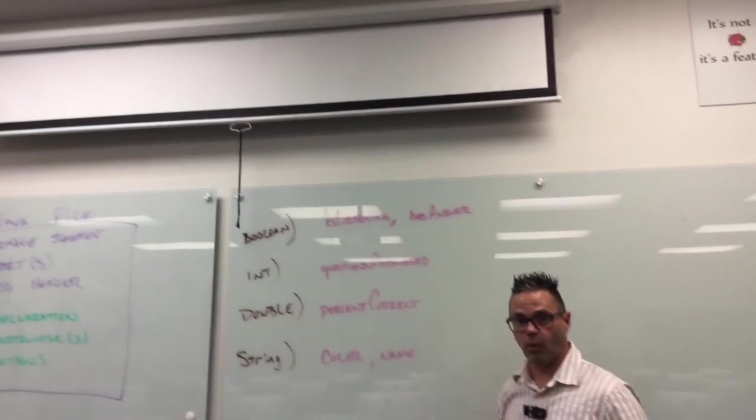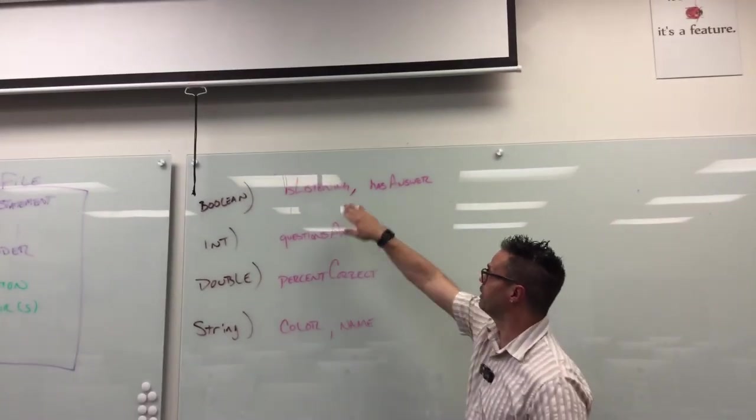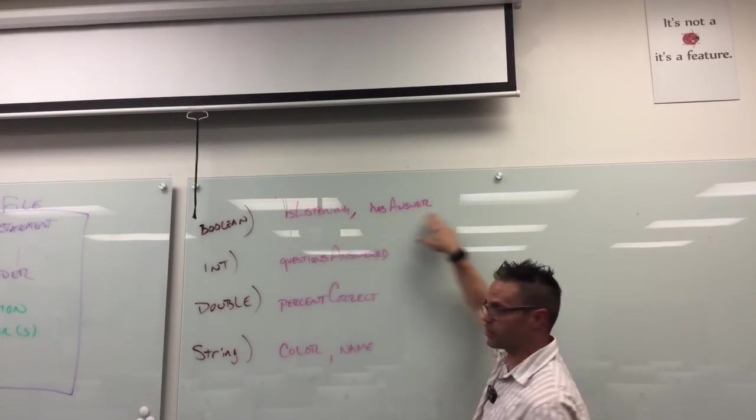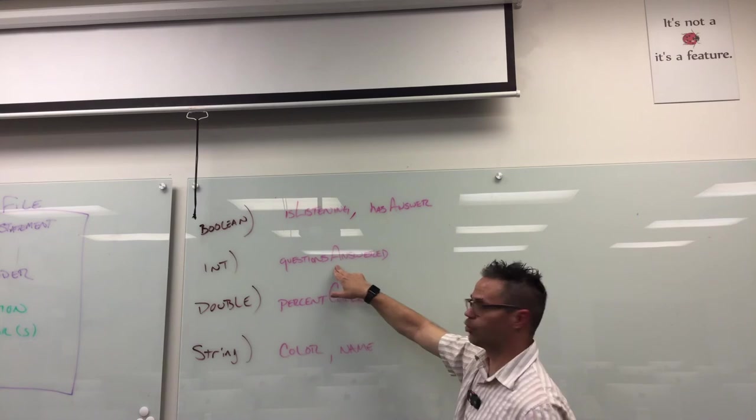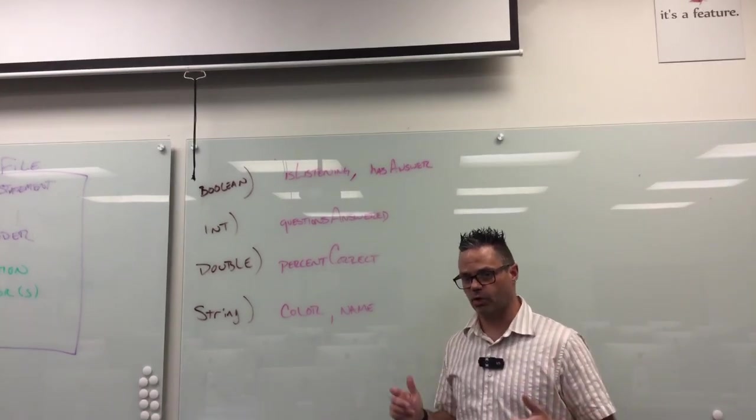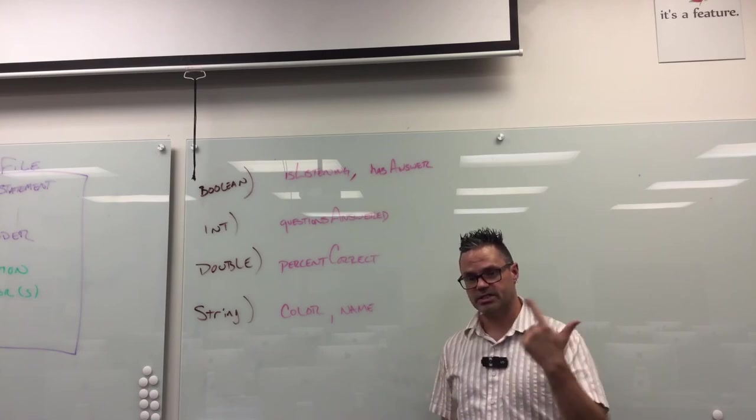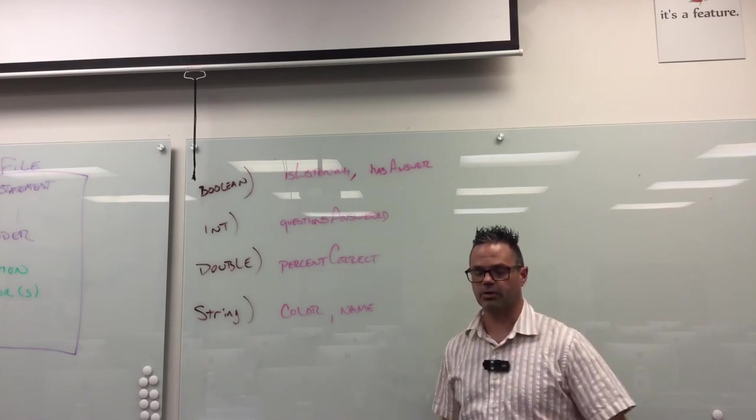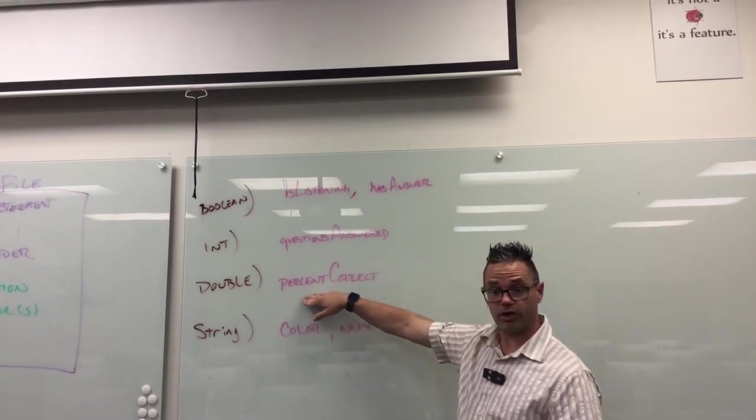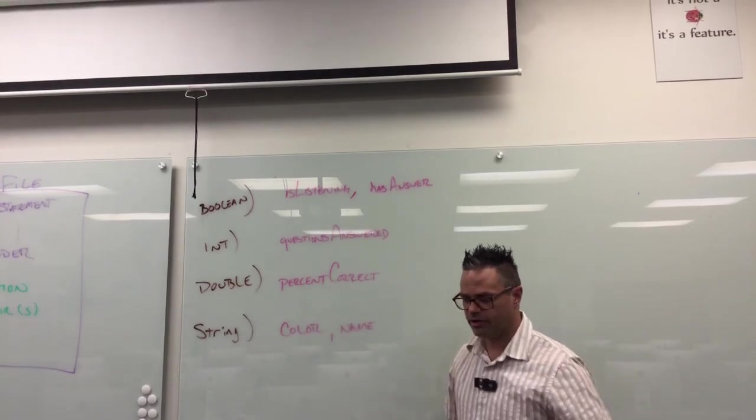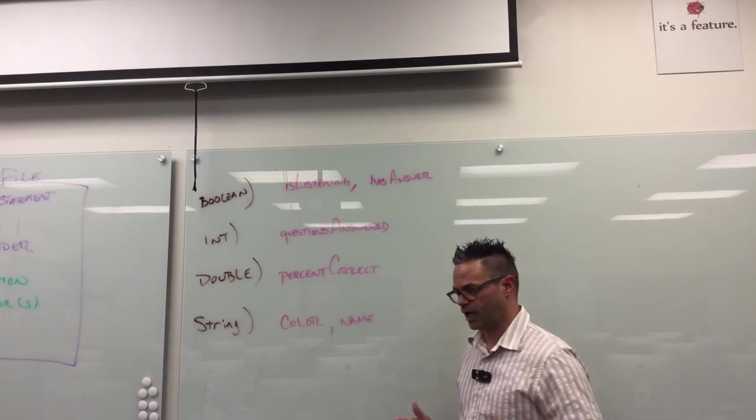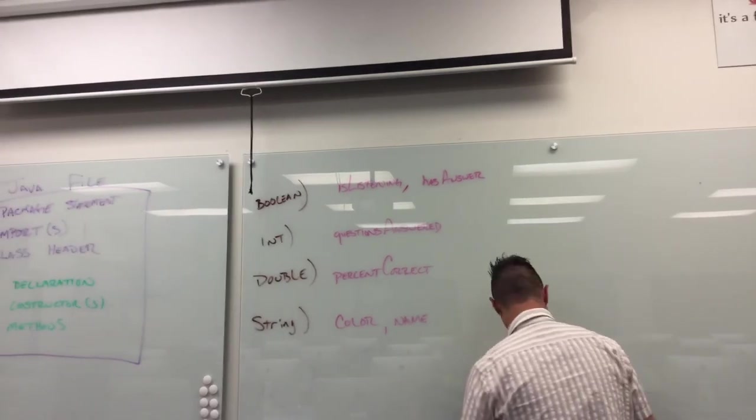I like to list them all out one at a time, so it's private boolean isListening, semicolon. Private boolean hasAnswer, semicolon. Private int questionsAnswered, semicolon. And so when you do the declaration section, each individual variable gets its own line, and it goes visibility, type, name, all the way down. Makes it real easy to keep track. You can also group them by types. You can see, oh, here's what this type is, here's what this type is, and here's these values. Makes it real easy for you to keep track of it. So that's one of the things I do when I'm doing my actual class design. Let's do a quick demo for that right now.